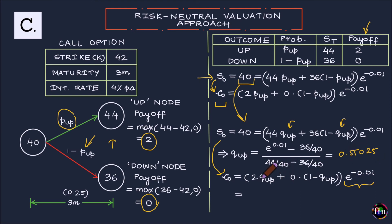So plug this value of Q up into this equation and again, you can check that C0, it comes to 1.09 the same premium as we obtained using the previous two approaches.